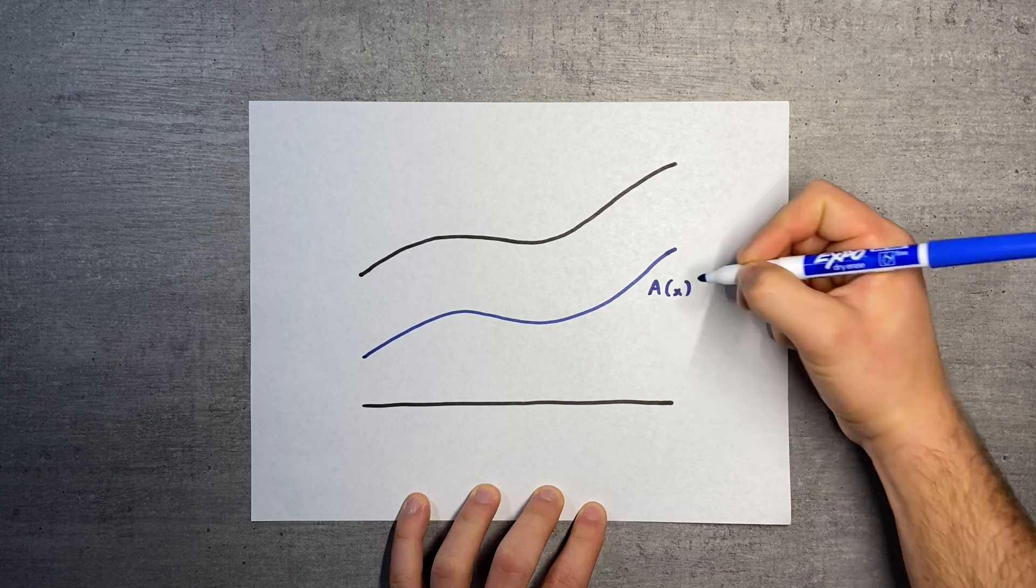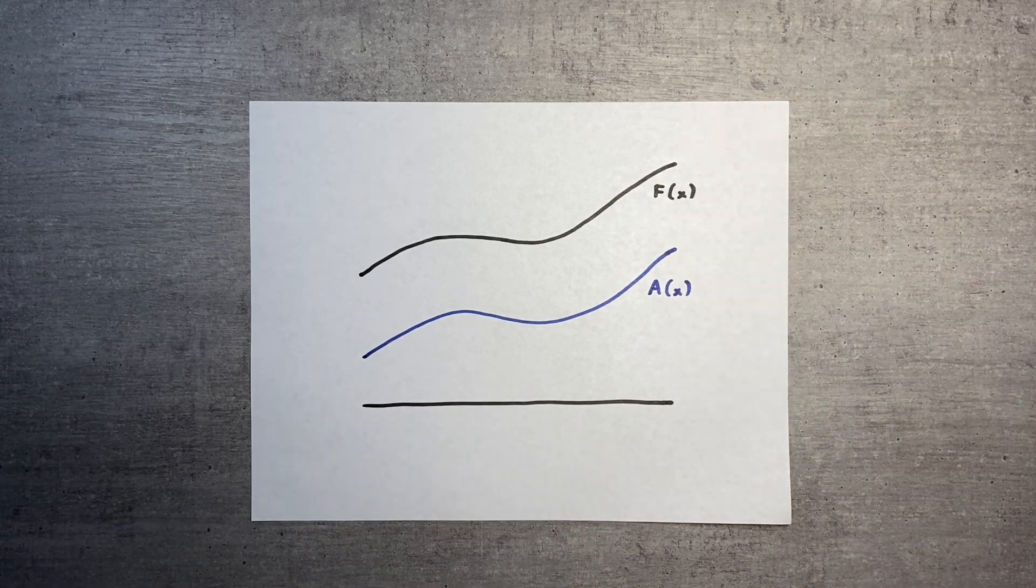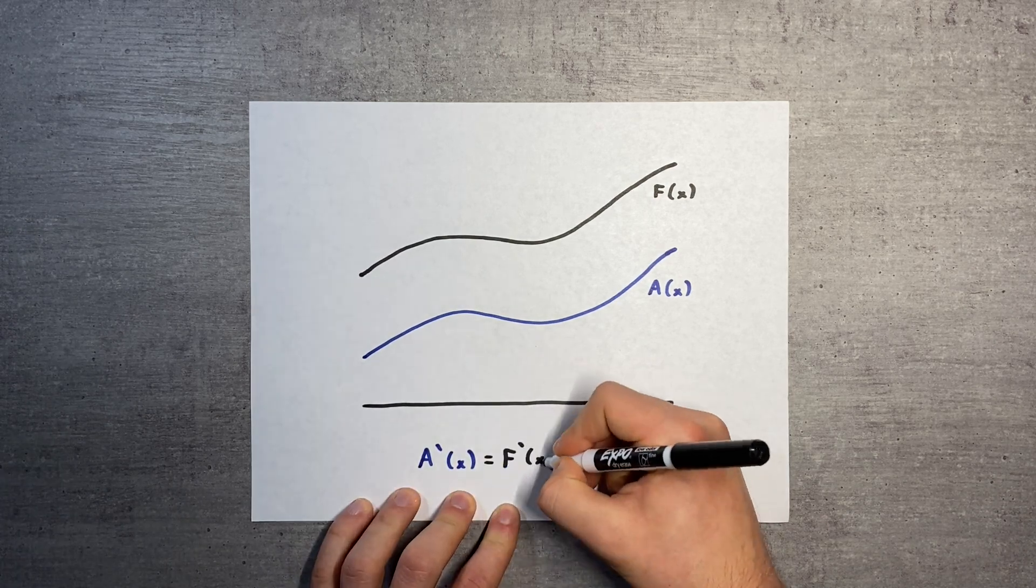Now imagine that my curve is an area function for some curve, little f of x. You may not know what the area function is, but you know that its derivative is f of x by the first fundamental theorem of calculus.